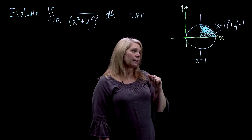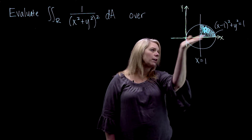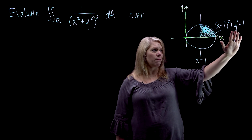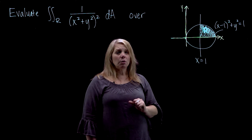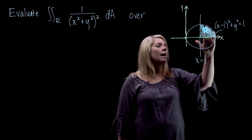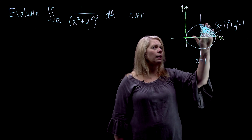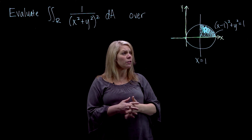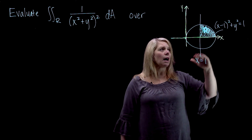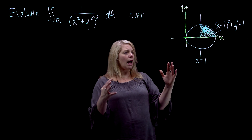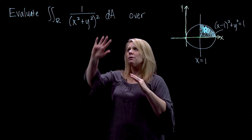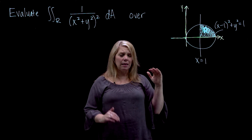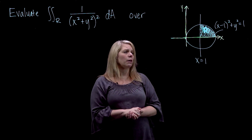This region is x simple. Going through the region in the direction of increasing x, I always enter at the line x equals 1 and leave through the right half of the circle. It is also y simple — going through in the direction of increasing y, I always enter through the line along the bottom and leave through the top half of the circle. The region is both x simple and y simple, but the conversion to polar coordinates for these equations is not as easy as some other examples. So let's go ahead and convert to polar coordinates, since the function is so much nicer there.